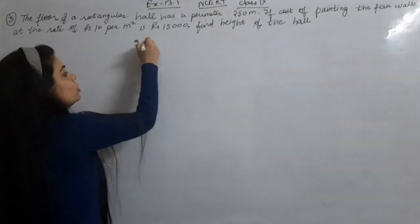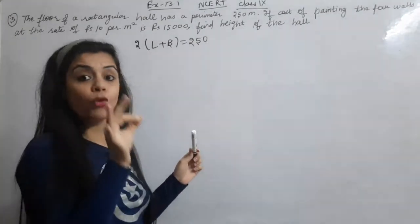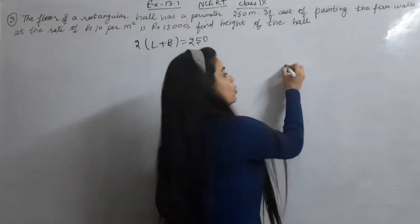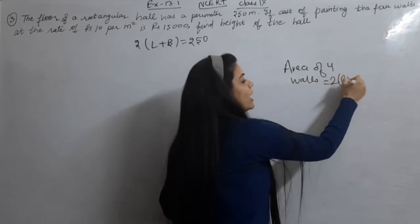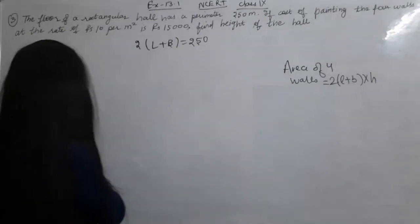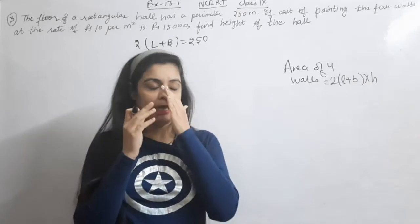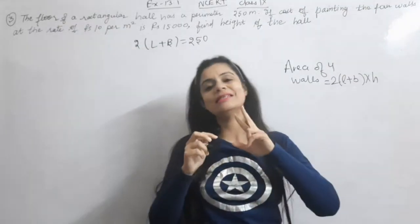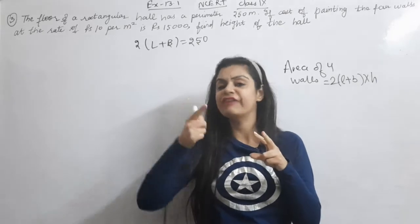So what is given: 2 into L plus B is equal to 250. Now, if the cost of painting the four walls — four walls means the area of four walls — is given, and then there is a cost sentence, you need to divide those costs. Always you need to divide those costs.